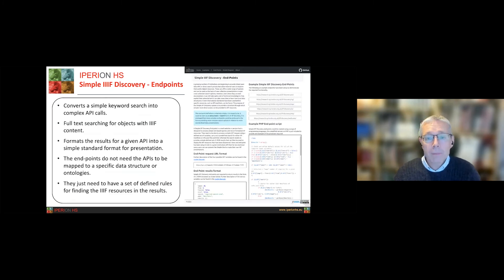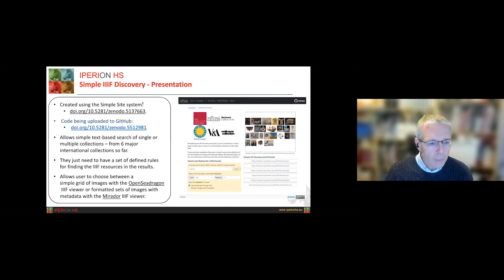So there is information on the example website about how those endpoints work and I'm actually sort of updating this to make it even easier. But the current information is there and it converts those simple keyword searches into complex API calls and returns all the IIIF information back, formats it and presents it for you. So I'm not going to read through all of the details here on the right, but all of that information is on the website, which I'll share a link to at the end.